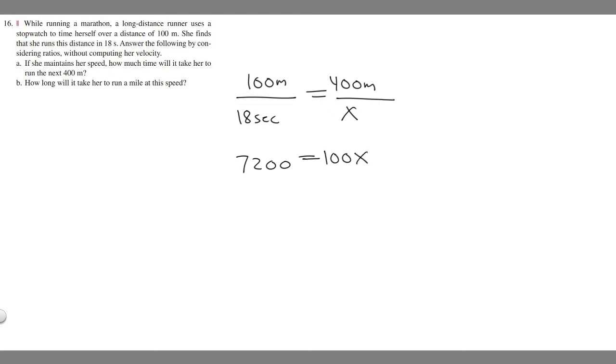If you want to solve for x, the time it'll take to run 400, just divide 7,200 divided by 100. If you do that, you're going to get 72.